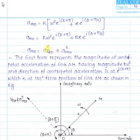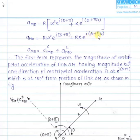The centripetal component of acceleration (also called the normal or radial component) has magnitude R·ω² and angle (θ + π). The tangential component of acceleration has a corresponding term R·α·e^(i(θ + π/2)), with magnitude R·α and angle (θ + π/2). We now plot these two acceleration vectors.